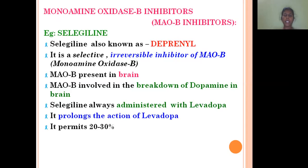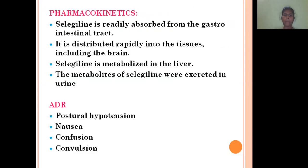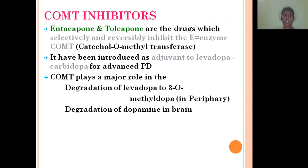MAO-B inhibitor — selegiline is an example, also known as Deprenyl. It is an irreversible inhibitor of MAO-B, which is present in the brain and is responsible for the breakdown of dopamine in the brain. When administered with levodopa, it prolongs the action of levodopa. Regarding pharmacokinetics, it is readily absorbed from the GI tract and rapidly distributed to tissues including the brain. Selegiline is metabolized in the liver and the metabolites are excreted in the urine. ADRs include postural hypotension, nausea, confusion, and convulsions.